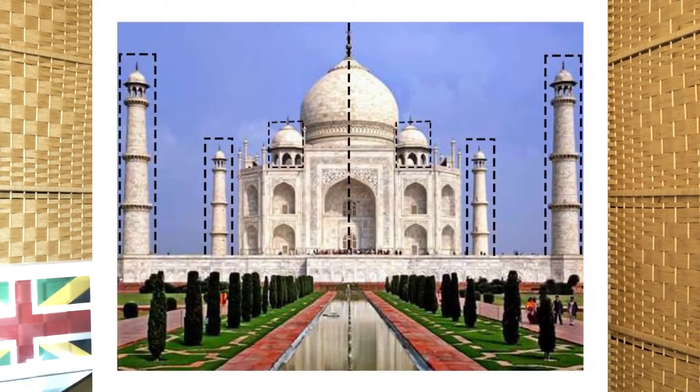So how is symmetry useful? Well, one example is architects use what is called the reflection property. So when they're designing their structures they make it symmetrical like this one, the Taj Mahal in India.